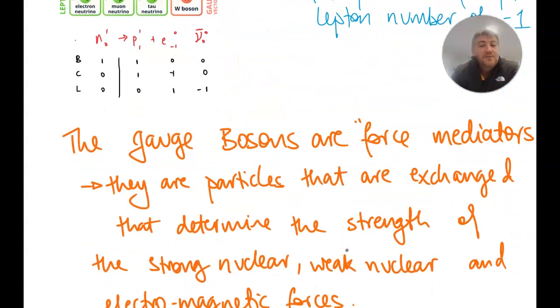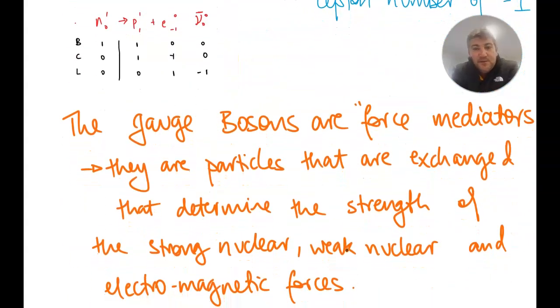Then we go on to things called the gauge bosons. These are the particles that are force mediators. So they're the particles that are shared or exchanged between the strong nuclear, weak nuclear, and electromagnetic forces to determine how big and how far those forces can act. So with the electromagnetic force, we get the photon. For the strong nuclear, the gluon, the weak nuclear, we have the W and Z bosons.